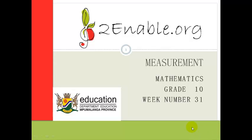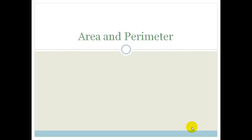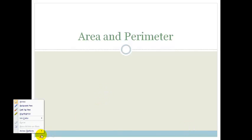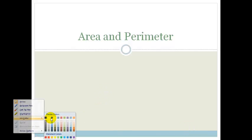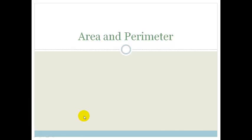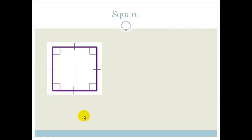Good day grade 10s. Welcome to week 31. We're going to be looking at measurement. To start off we're going to be revising the very basic concepts of area and perimeter and the area and perimeter calculations or formulas for different shapes.